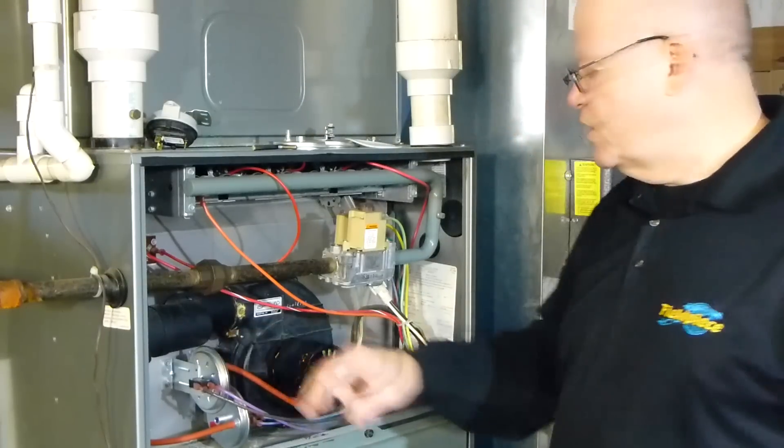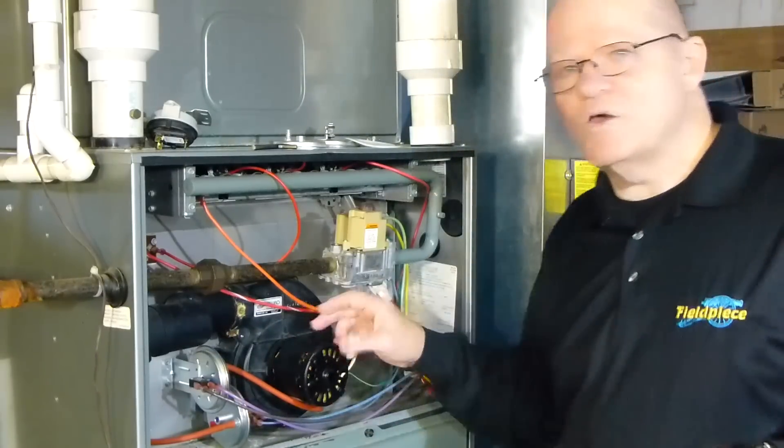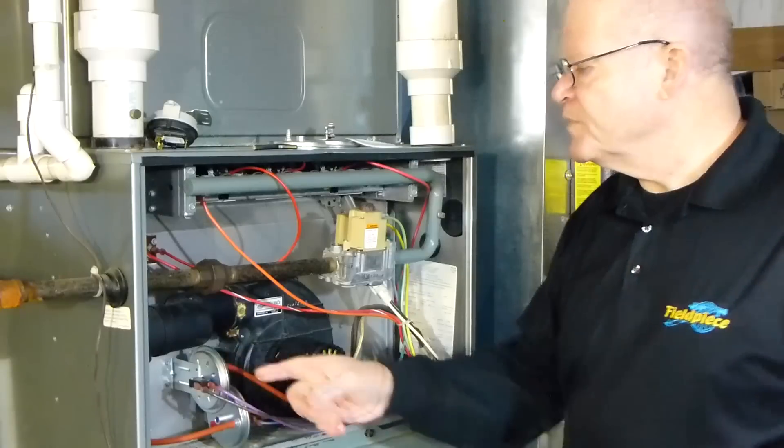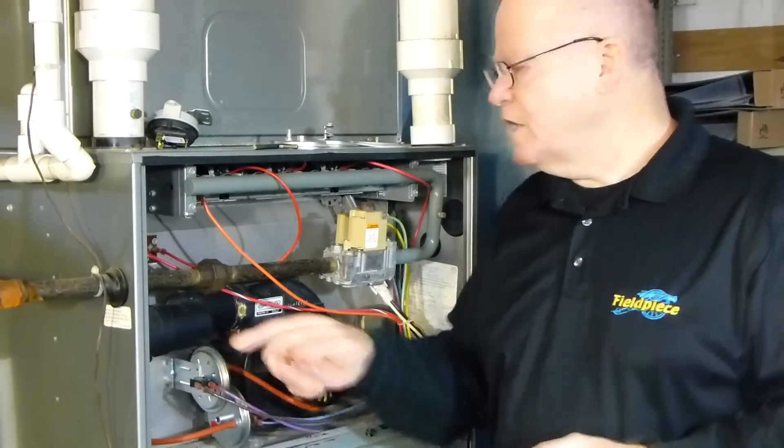This particular switch, being on the inducer, can still get moisture in it even though that's pulling a vacuum and sucking out. This is a negative pressure in here. When this shuts down, guess what happens?